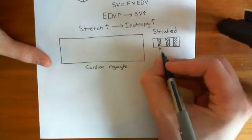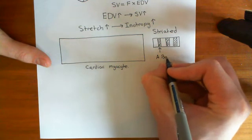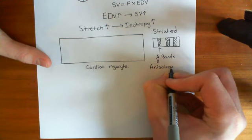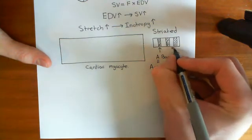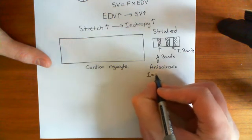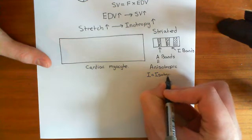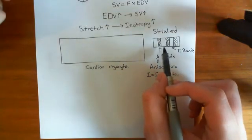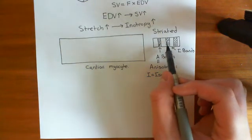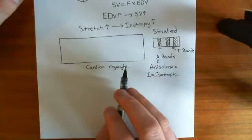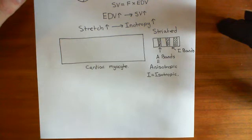The dark bands are the A bands — A stands for anisotropic. The light bands are the I bands — I stands for isotropic. Now let's discuss the microscopic structures within the cardiac muscle cell that actually result in these striations. Basically, it is the contractile machinery within the cell that produces this striated appearance. The contractile unit is known as a sarcomere.